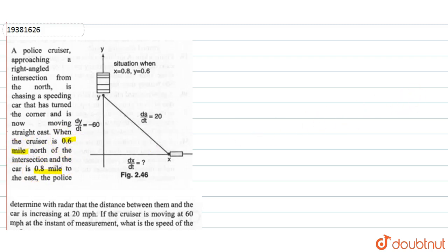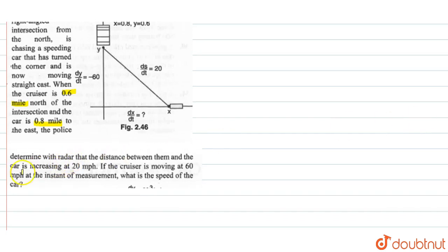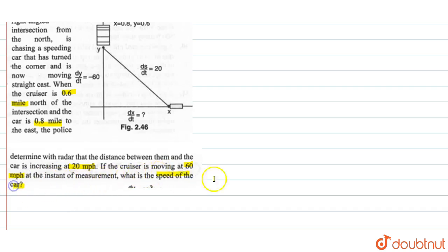The distance between the car and the police is increasing at 20 miles per hour. The police vehicle is moving at 60 miles per hour. We need to find the speed of the car.